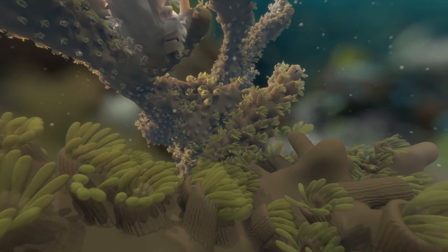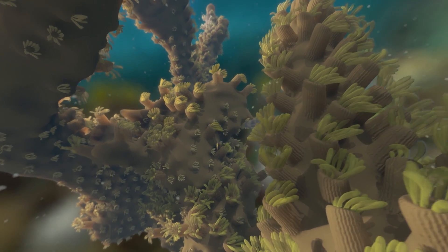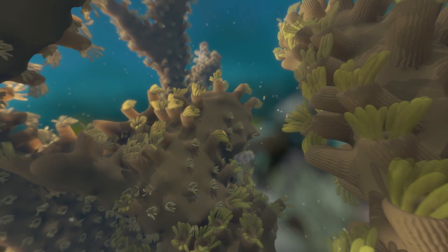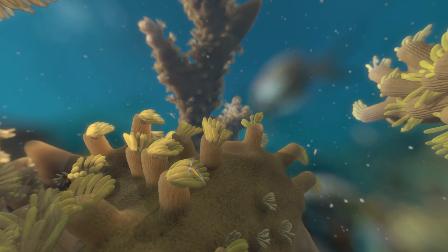Each coral is actually made up of an entire colony of tiny animals called coral polyps. And, like all animals, they eat.